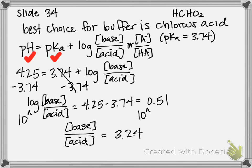That's all they're looking for in this problem: to figure out what ratio of base to acid is going to give us a pH of 4.25.